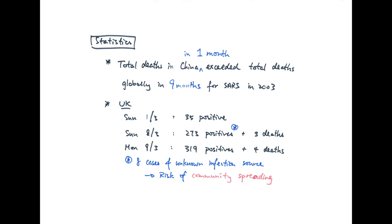Now let's look at the numbers in the UK. On the 1st of March, which was last Sunday, there were 35 confirmed cases in the UK. A week later, which was 8th of March, there were 273 confirmed cases plus 3 deaths. Today, as I make this video, is Monday 9th of March. As I film this video in the evening, there are 319 confirmed cases plus 5 deaths.